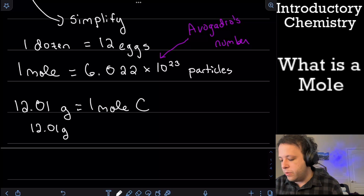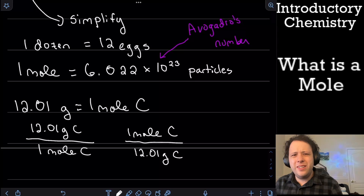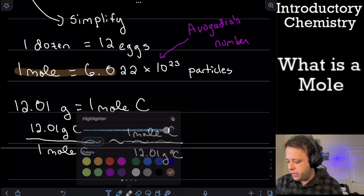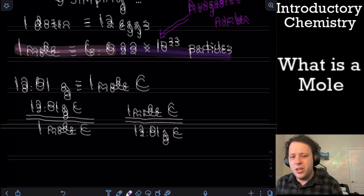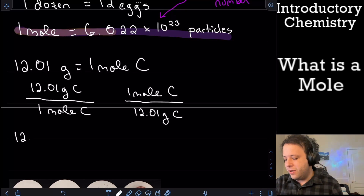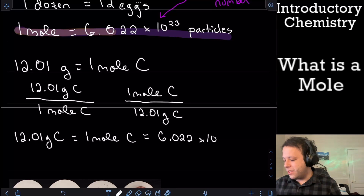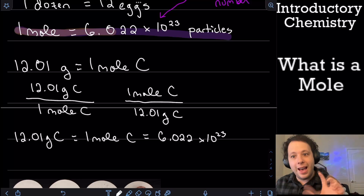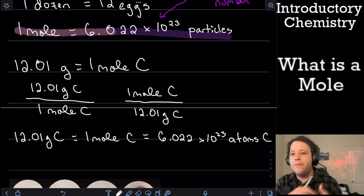So that's a conversion term for ourselves. We can write: 12.01 grams of carbon over one mole of carbon, or flip it depending on our dimensional analysis conversion. And being that 12.01 grams of carbon is one mole of carbon, one mole of carbon is also 6.022 times 10 to the 23 particles — in this case, atoms of carbon. All those terms can be used together, using our periodic table as conversion terms.